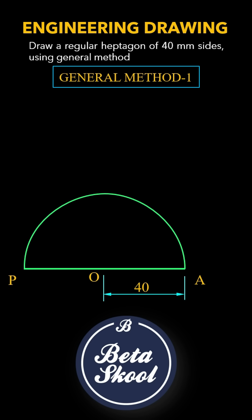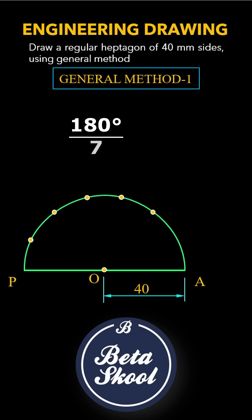Next, divide the semicircular arc into 7 equal parts, since we're drawing a heptagon. Each section subtends an angle of 180 degrees divided by 7, approximately equal to 25.7 degrees at the center O.